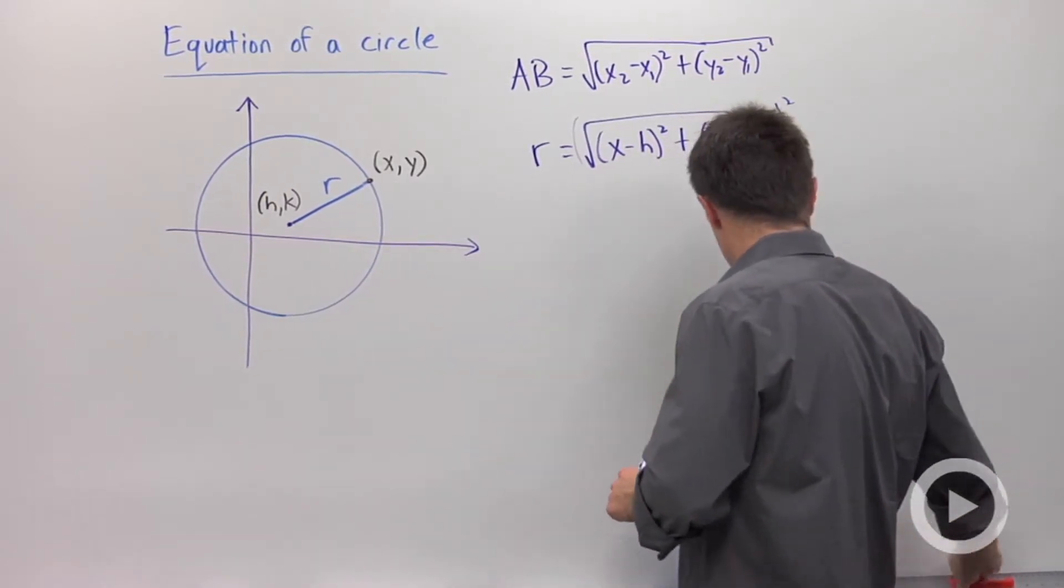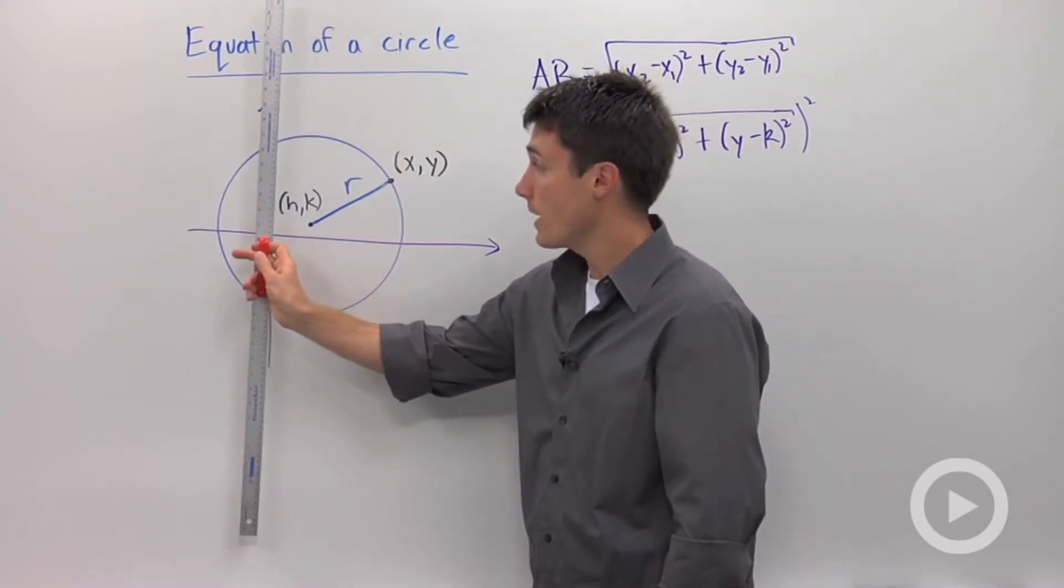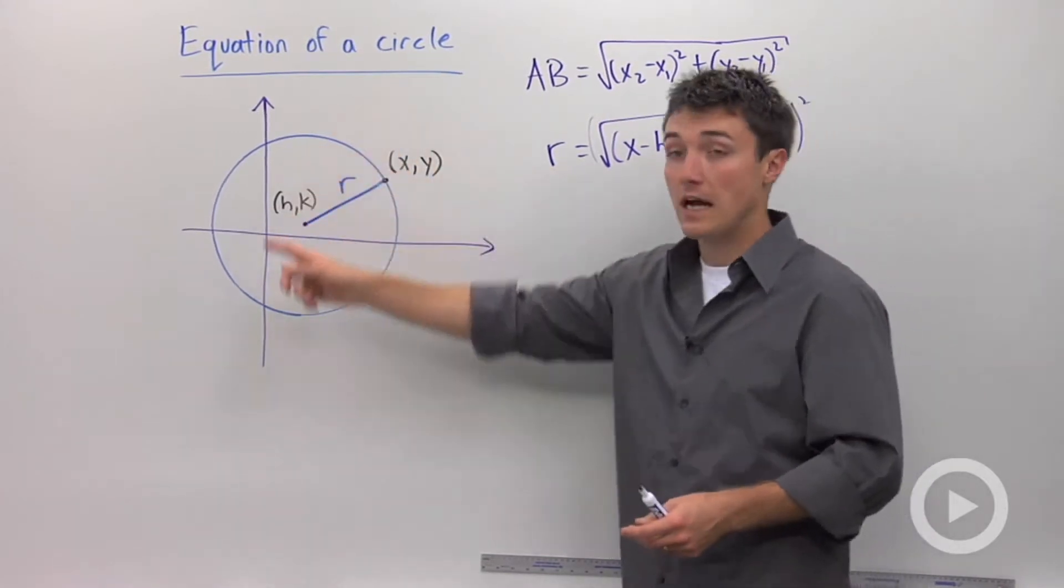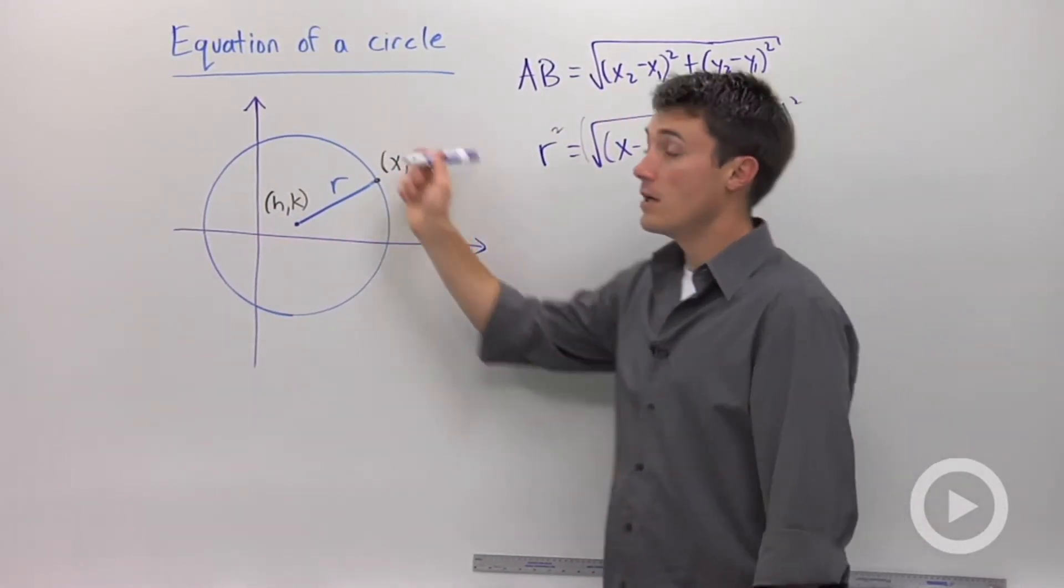The vertical line test, remember, says if you can draw a vertical line anywhere on your graph and it intersects your function more than once, it's not a function. So we know that a circle is not a function. So we're going to square both sides so that we get the full function.